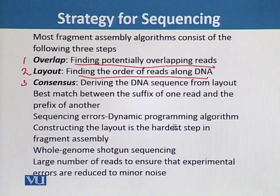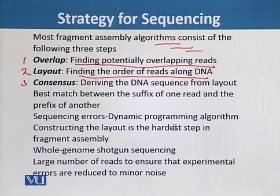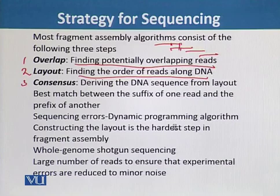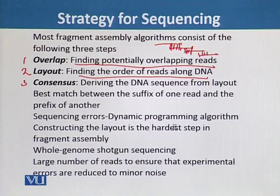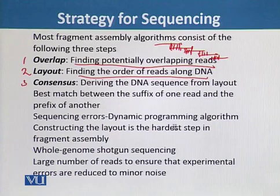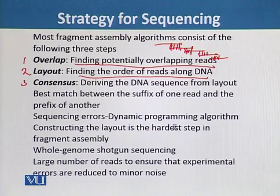The overlap problem is to find the best match between the suffix of one read and the prefix of another. For example, we can see reads one, two, three, and four — the suffix of the first read overlaps with the prefix of the second, and similarly the suffix of the second overlaps with the prefix of the third, and so on. Using this strategy, we can assemble the whole fragments into a single genome. Finding the longest suffix of one string that exactly matches the prefix of another string is basically the theme of this sequencing strategy.